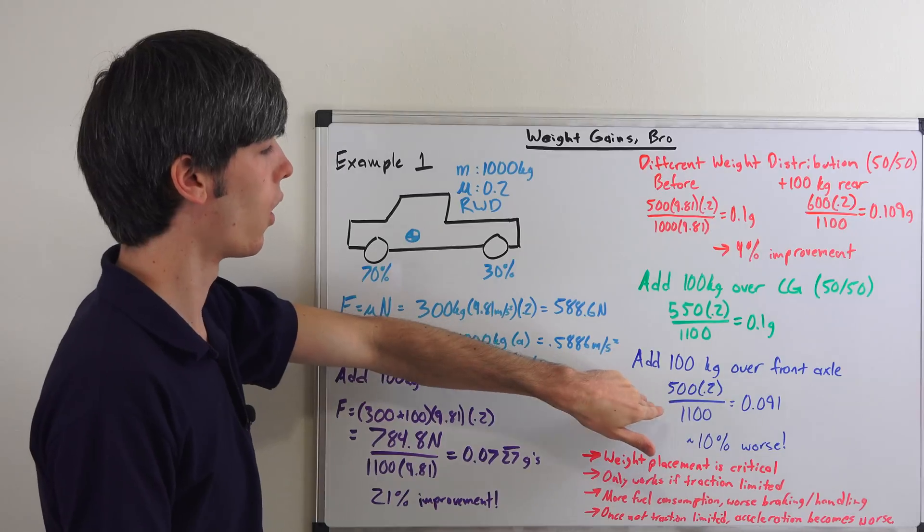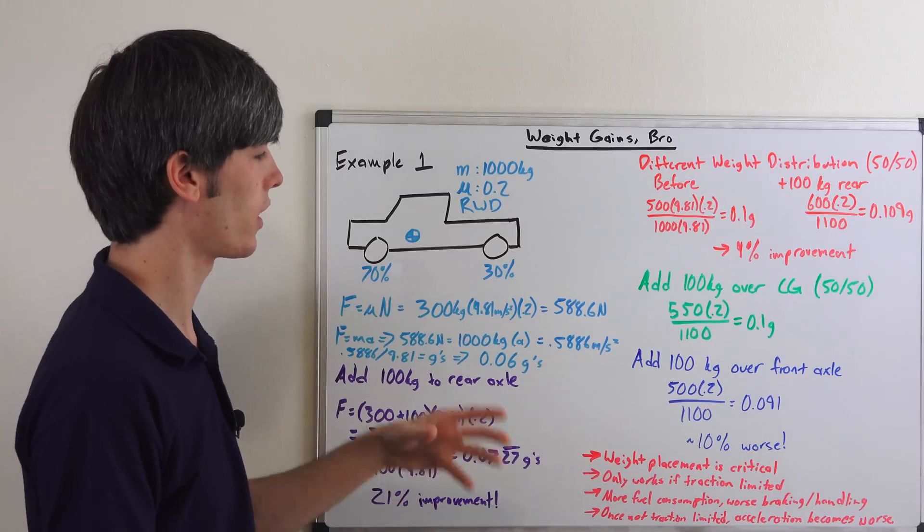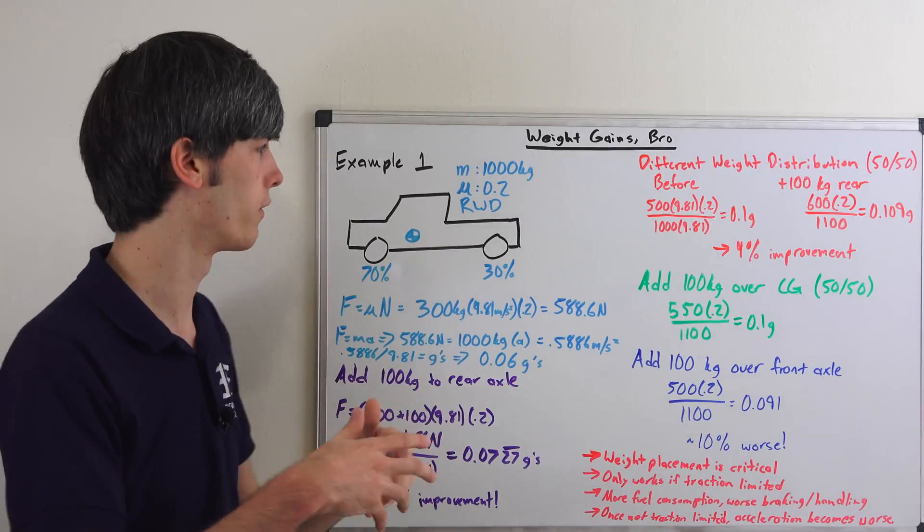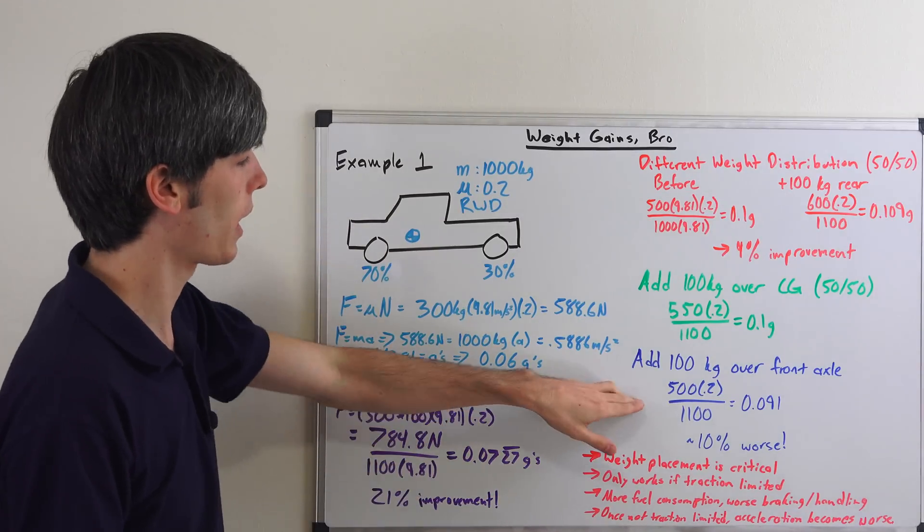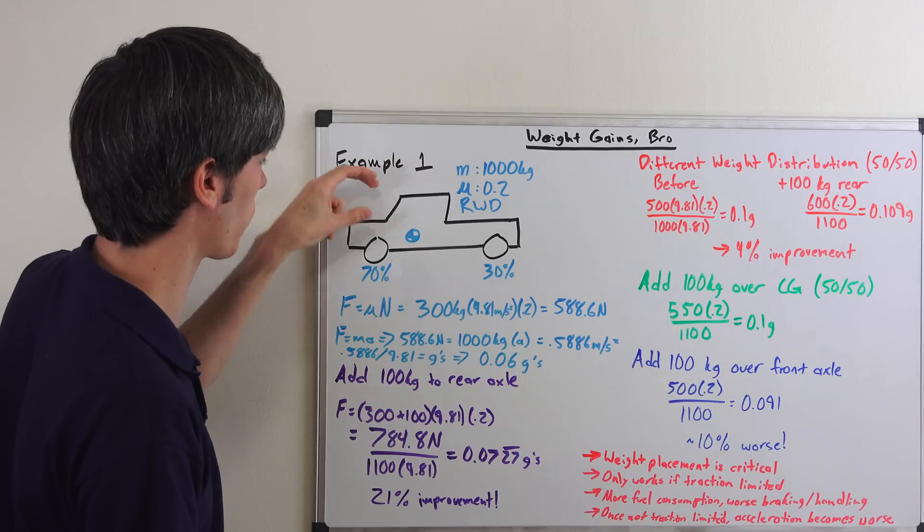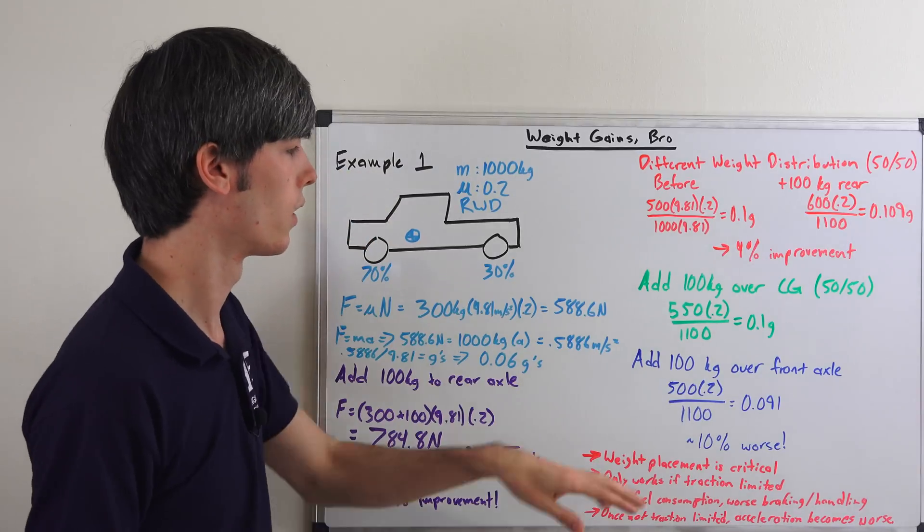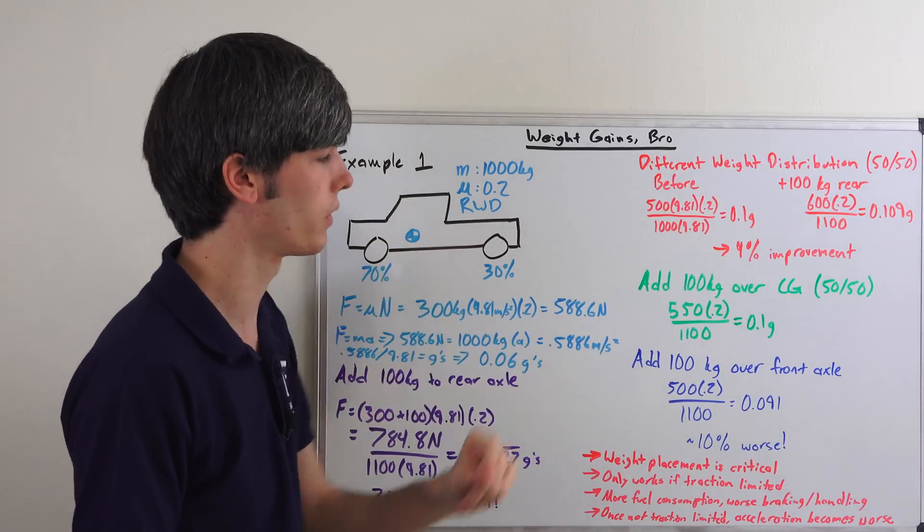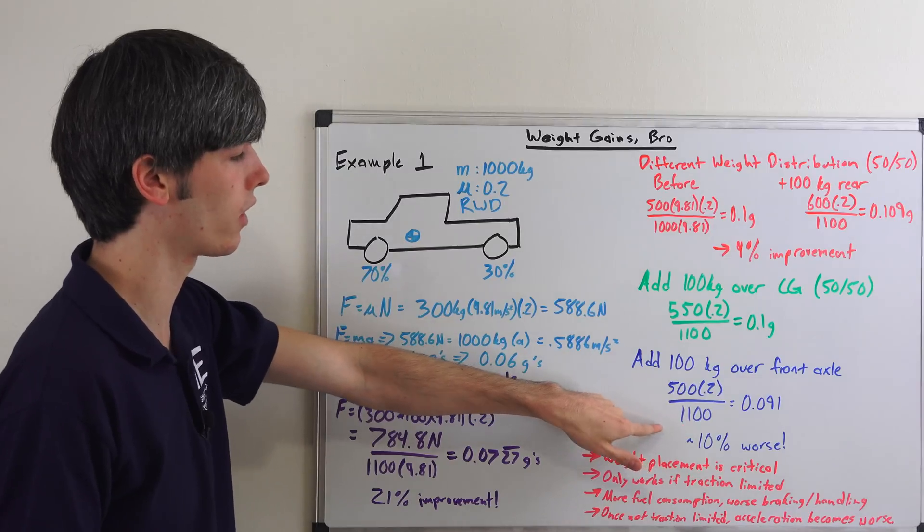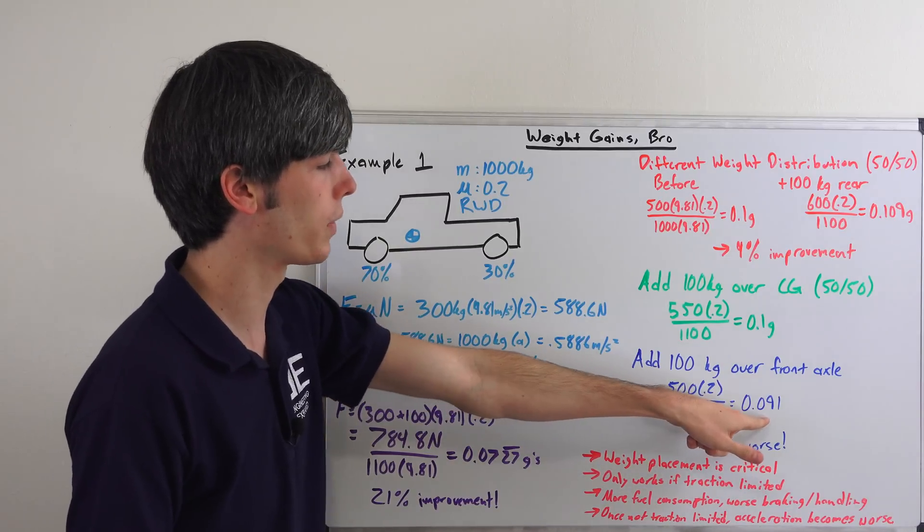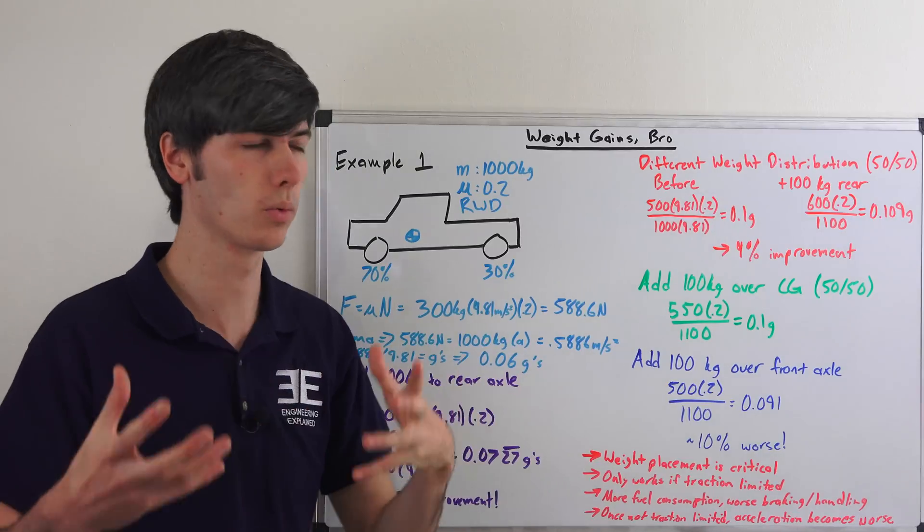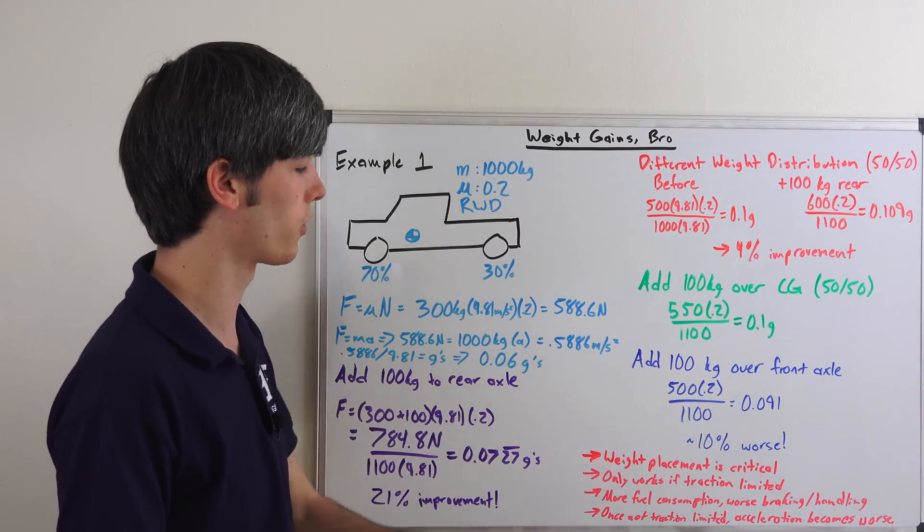Now adding 100 kilograms over the front axle, let's say you just have no clue what you're doing and you're like all right whatever I heard that you add sandbags, I throw it over the front of the truck and then I go on about my way. Well let's see what happens in this case. So now we have the same amount of weight on the rear axle if we're putting the 100 kilograms directly on top of the rear tire. Same amount of weight on the rear so 500 kilograms, we're doing the 50-50 distribution, multiply that by 0.2, but now we're dividing by 1100 instead of a thousand because we've added weight. Well now we can only accelerate with 0.091 g's. So it's 10% worse because we didn't realize where we should have placed that weight. So weight placement is critical.